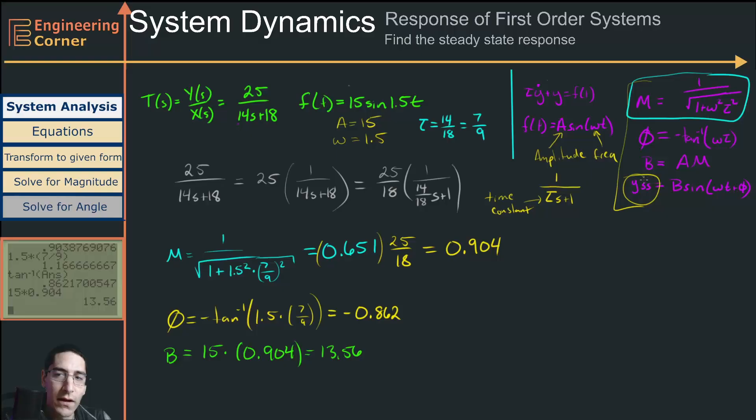And then finally, we have all these pieces of information. We can say our steady state is equal to B, so 13.56 times the sine of omega T. Omega is 1.5, so 1.5T. Now, we have a negative theta term, so minus 0.862. And this is our steady state response.